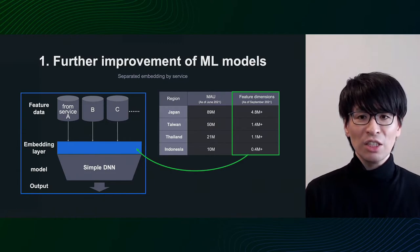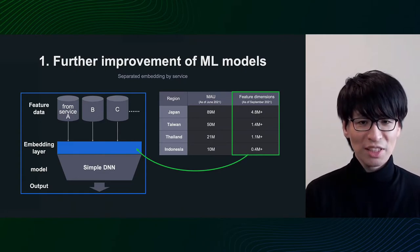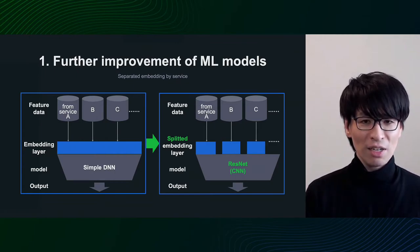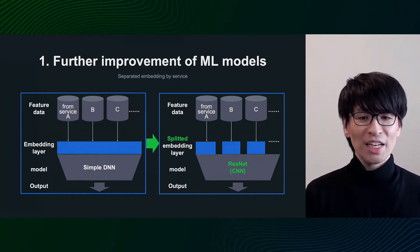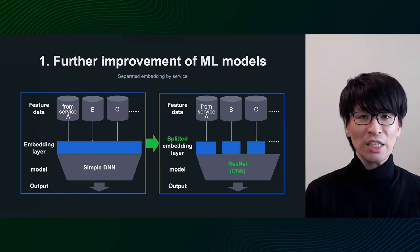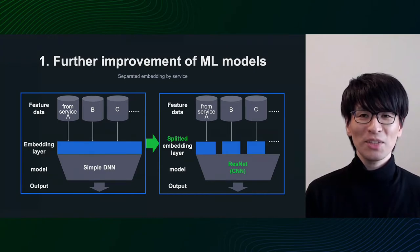When I talked about the scale of the persona system, I introduced the dimensions of the feature data — this number of dimensions is, in other words, the dimensions input to this embedding layer. As a result of various trials to further improve model accuracy, the model structure was improved as shown in the figure on the right. First, we split the embedding layer so that the embedding process, which used to be done in a single layer, is now done separately for each type of service that is a source of the feature data. Furthermore, the model itself was changed from a simple deep neural network to a convolutional neural network using ResNet. With these efforts, we were able to improve model accuracy further.